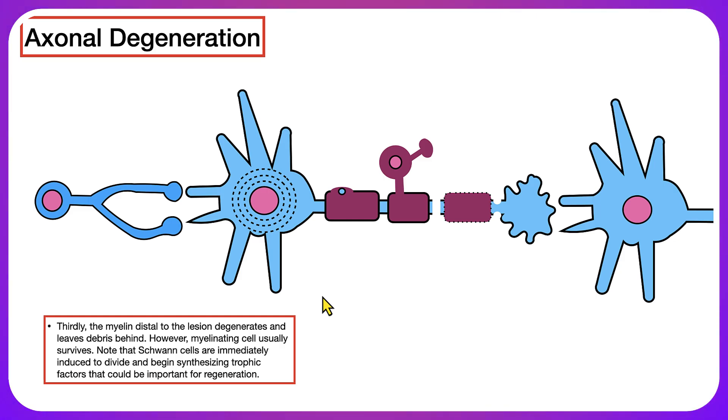The third part is when the myelin distal to the lesion degenerates and leaves debris behind. However, the myelinating cell usually survives. Note that Schwann cells are immediately induced to divide and begin synthesizing trophic factors that could be important for regeneration.